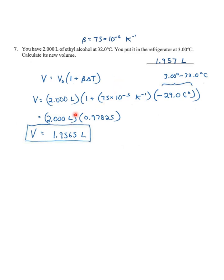We plug in all the values: 2 liters, we have the beta of ethyl alcohol that we look up in the table, times the change in temperature, which is negative 29 Celsius degrees. We get in this line that it's going to be 97.825% of its original volume. So the final volume is 1.9565 liters.